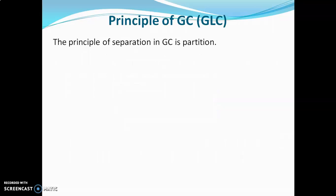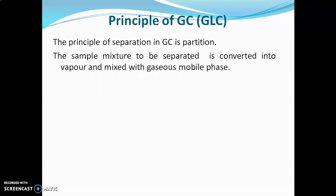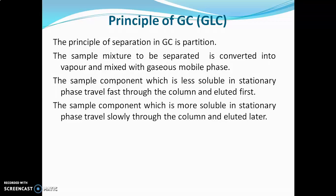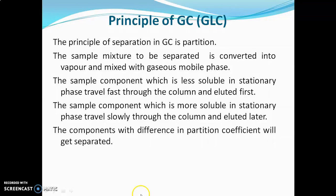We will see principle here. The principle is of gas liquid chromatography. Because of its wide applications, gas liquid chromatography is also known as gas chromatography. The principle of separation in GC is partitioning. The sample mixture to be separated is converted into vapor and mixed with gaseous mobile phase. The sample component which is less soluble in stationary phase will travel fast through the column and get eluted first. The sample component which is more soluble in stationary phase will travel slowly through the column. Components with difference in partition coefficient will get separated.